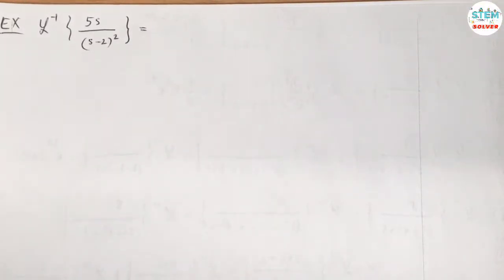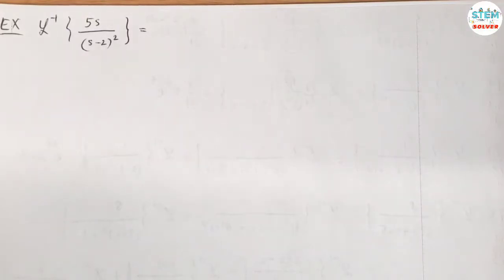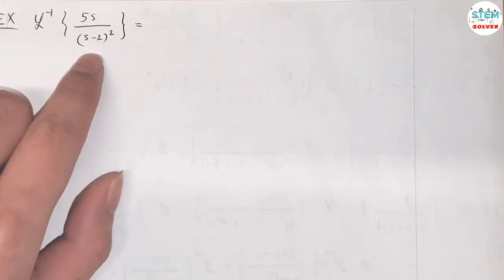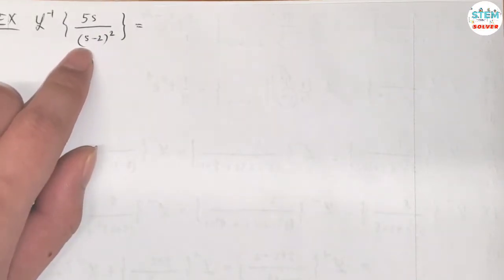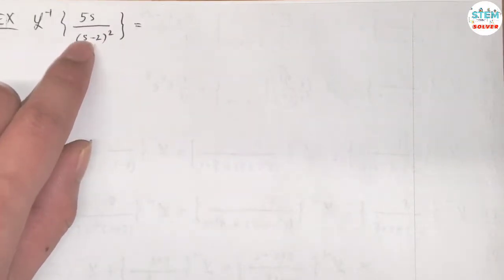Find the inverse Laplace transform of 5s over (s-2) squared. First looking at this, I cannot find the inverse Laplace transform of this directly. So after a while thinking about this, I see that it would be right if I have (s-2) on top because I can simplify this down.